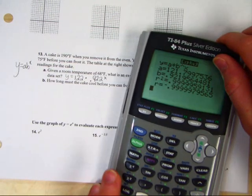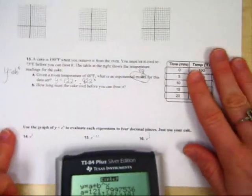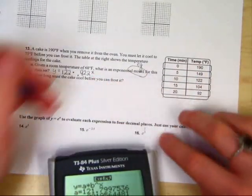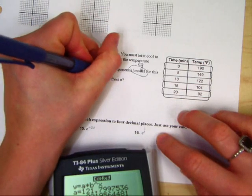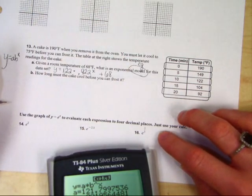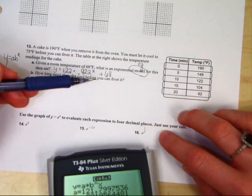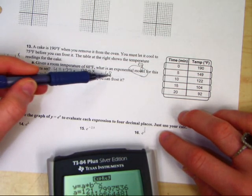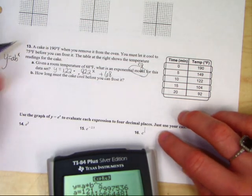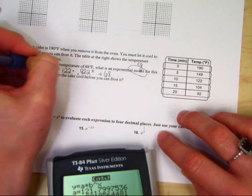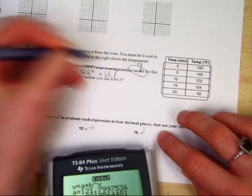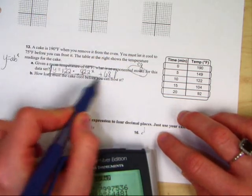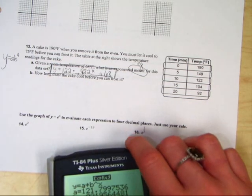Now because on our calculator we had to take 68 degrees away, in our equation, we have to put a plus 68 in the back, so that when we plug time back in, our temperatures will be according to our plus 68 here, which was the room temperature. So that is the model for the temperature of the cake based on the time.